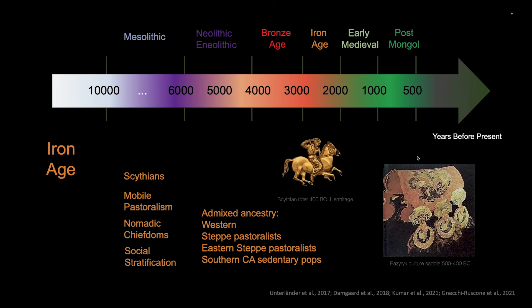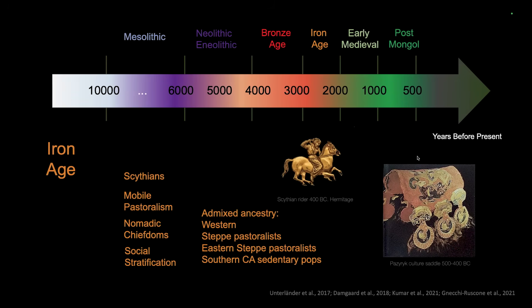Going into the Iron Age, this period is associated with the Scythians, known for mobile pastoralism. Populations that were semi-nomadic or sedentary in the Bronze Age become fully mobile nomads in the Iron Age — an innovation that hadn't happened before. People start riding horses, nomadic kingdoms develop, and social stratification is visible in burial types. The ancestries of Western steppe, Eastern steppe pastoralists, and Southern Central Asia become mixed, very likely because mobile pastoral people were able to move and interact extensively.